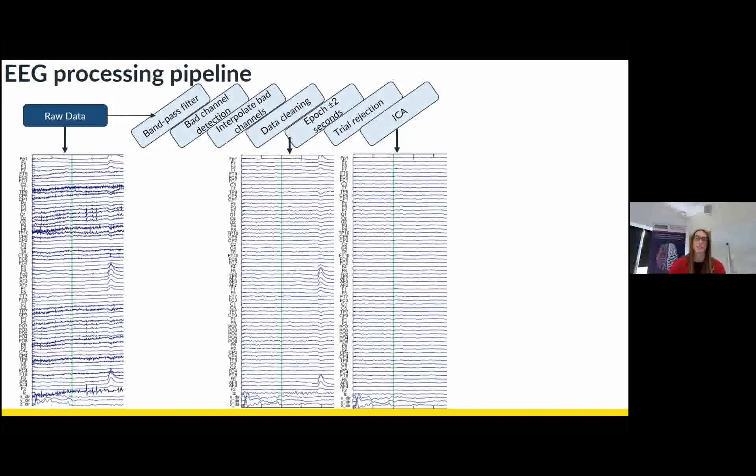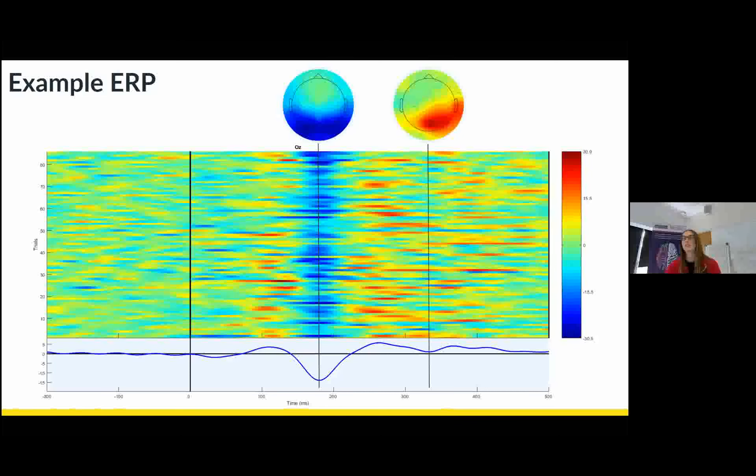So I'll just show you now an example of the visually evoked responses that we get. So you can see across all trials, we get a nice clean M170 on one of our occipital electrodes. This is for one participant. So you can see that with our augmented reality design, we're getting some pretty reliable visually evoked responses.